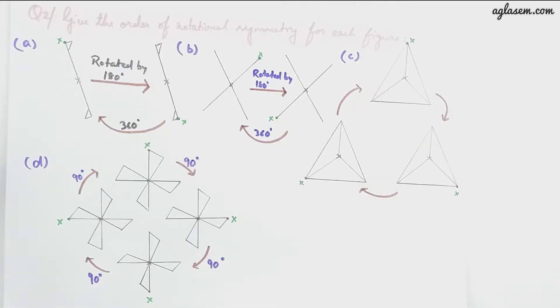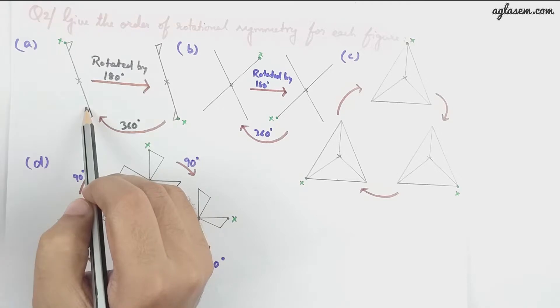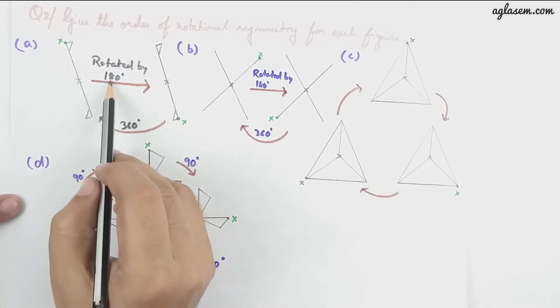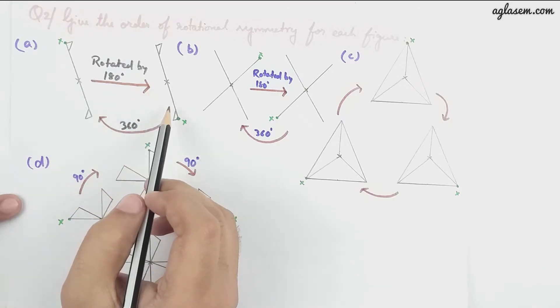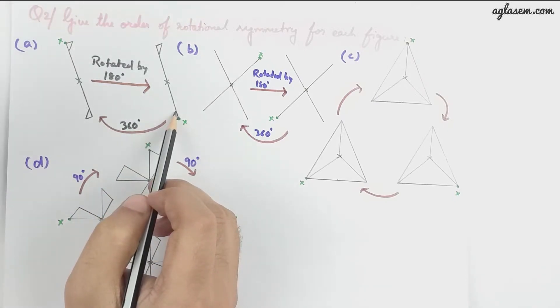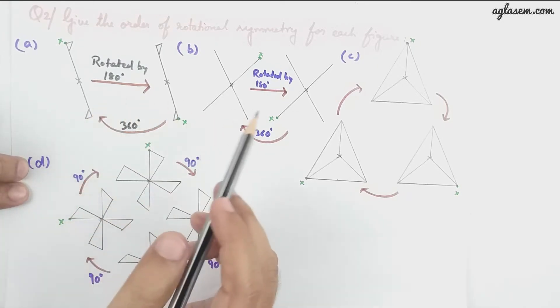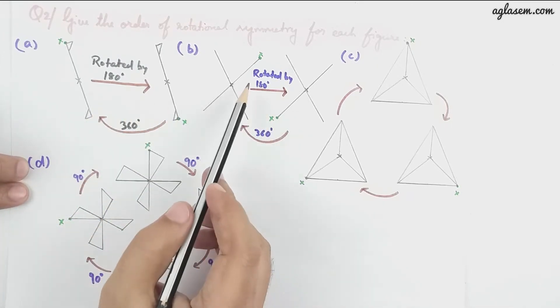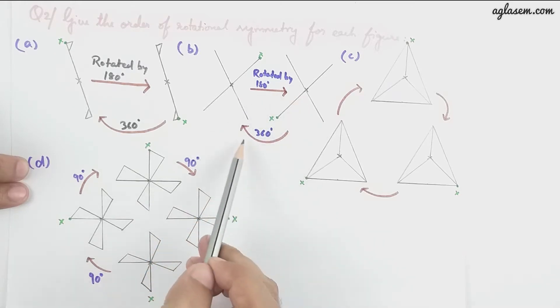Question number two now says: give the order of rotational symmetry for each figure. Figure A is this one. So here it will be two. Why? Because if this is rotated by 180 degrees, it will be somewhat like this. So we just have to rotate it by 180 degrees, it will again come like this, and 360 degrees again back to that position. In part B, if rotated by 180 degrees it will be like this, and if it is rotated by 360, it will be again like this. So again the answer is two.